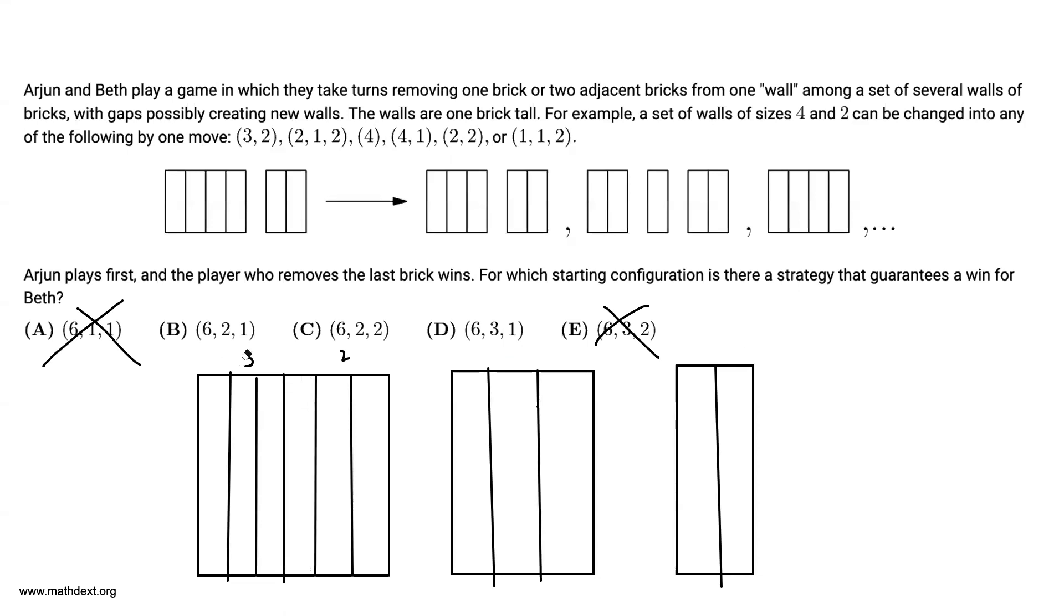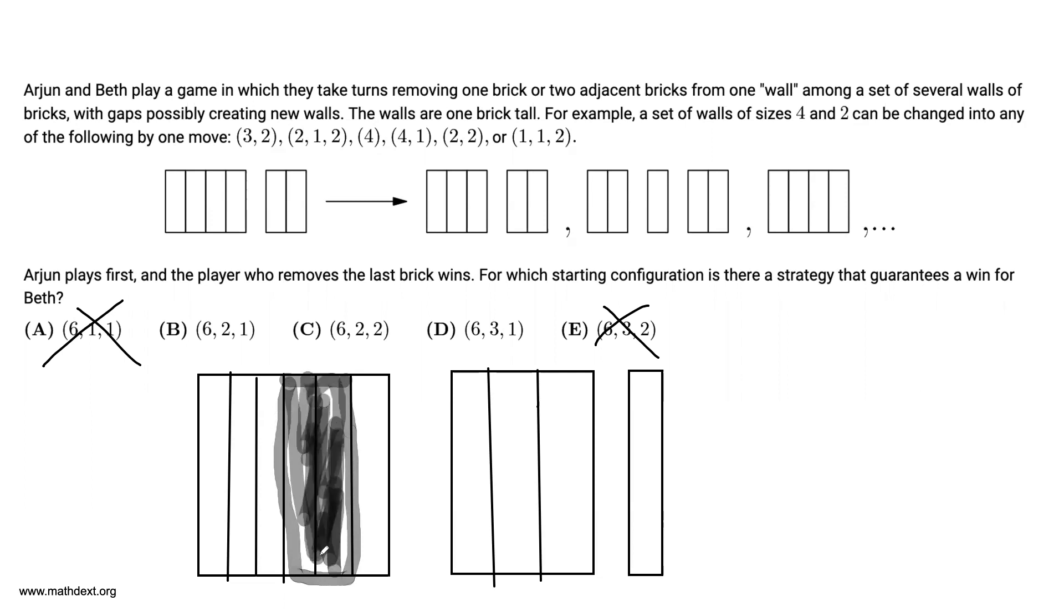And for answer choice D, something similar can happen. If we start out with a 6, 3, 1, what Arjun does is, since he can take two adjacent bricks away, he removes these two. And this leaves Beth with a 3-1-3-1 split.